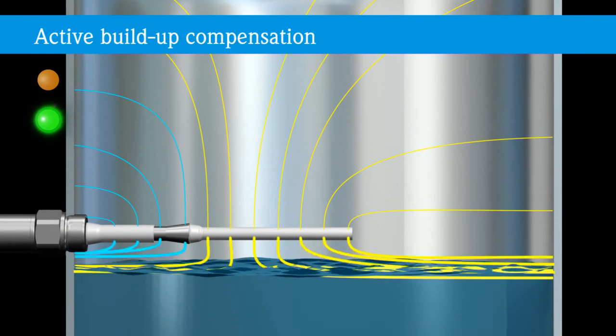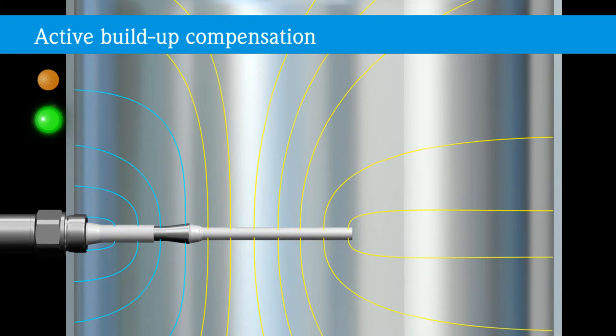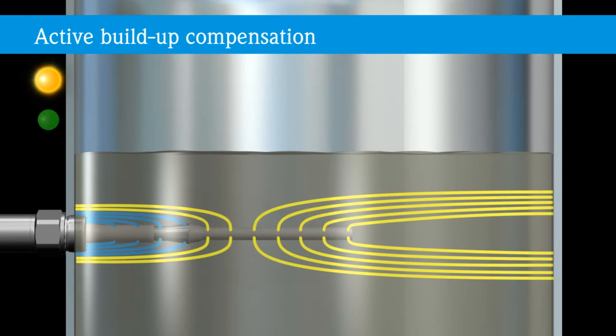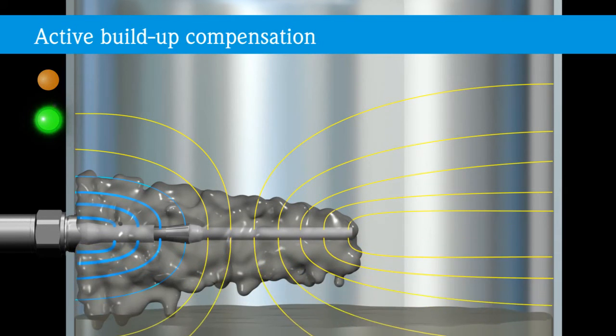The shielding effect of the active build-up compensation prevents a direct current flow along the probe electrode to the tank wall. Therefore, the current of the probe does not flow in the area of the build-up, but only in the area of the actual cover. This principle enables the probe to measure reliably even in spite of strong conductive build-up.